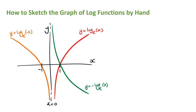For the fourth shape, if we have a negative in front of the log function and in front of the x, then this graph is going to look something like this. The curve is to the left of the asymptote, and as the values of x decrease, the curve approaches negative infinity, and as the values of x increase, it approaches positive infinity and towards the asymptote. It's important that you remember these four shapes.